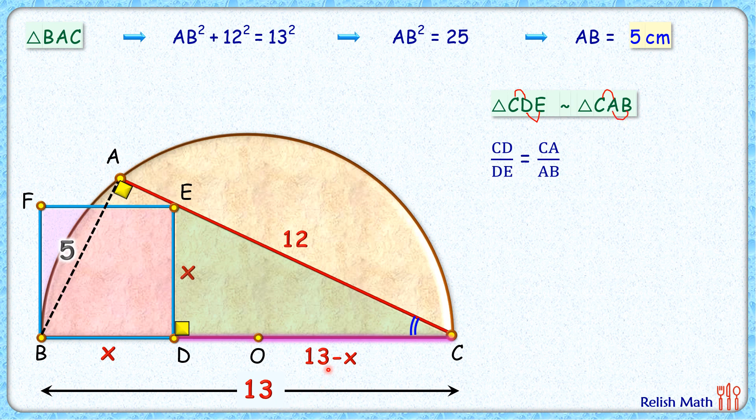Now CD length is 13 - x and DE length is x. CA is given as 12 and AB we have calculated as 5.